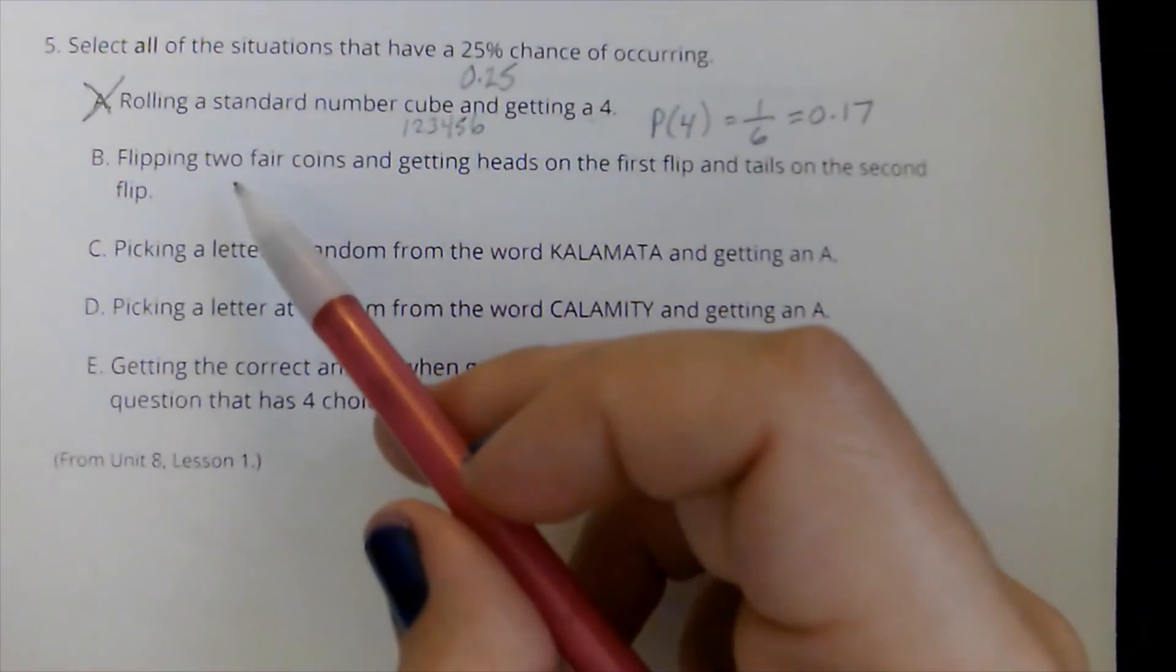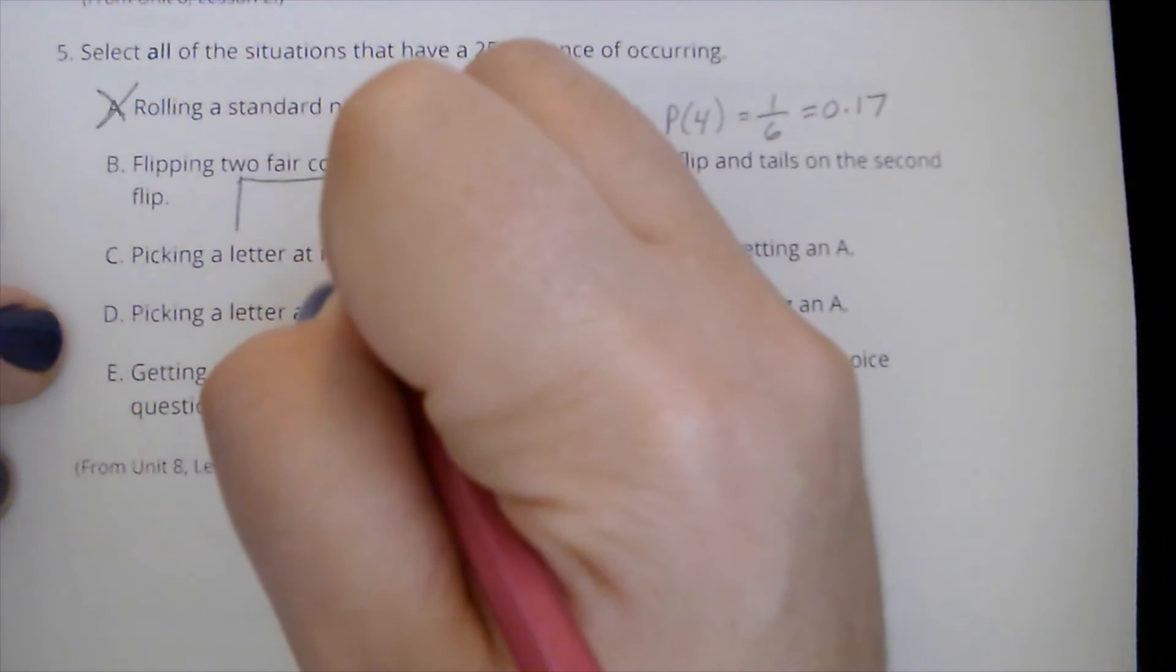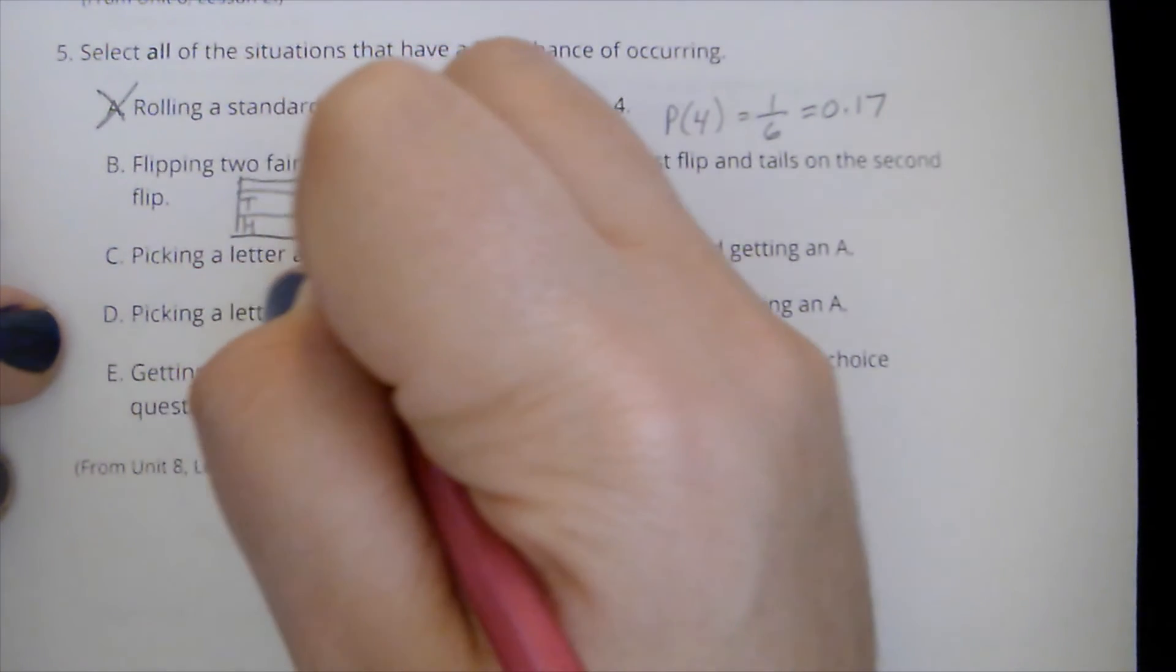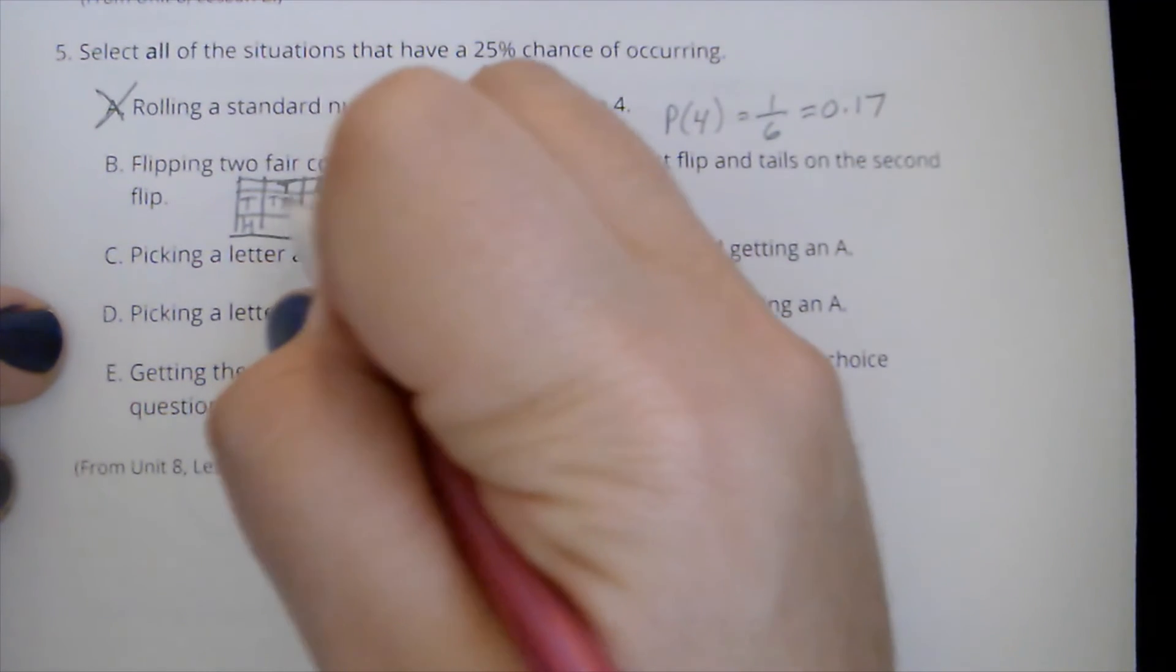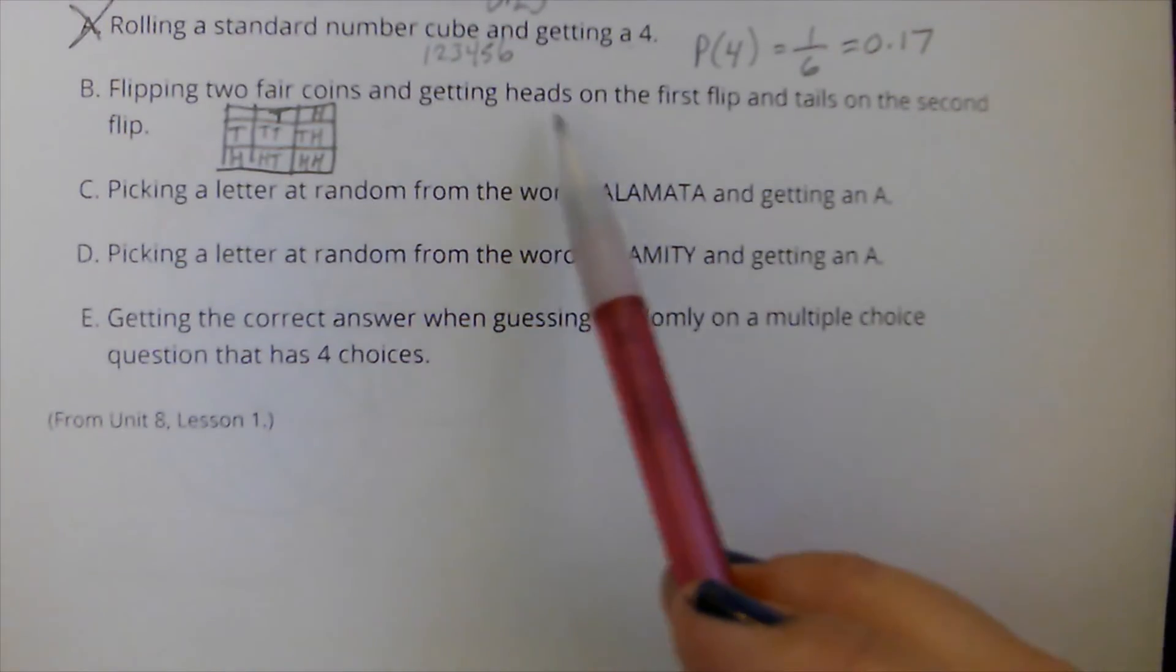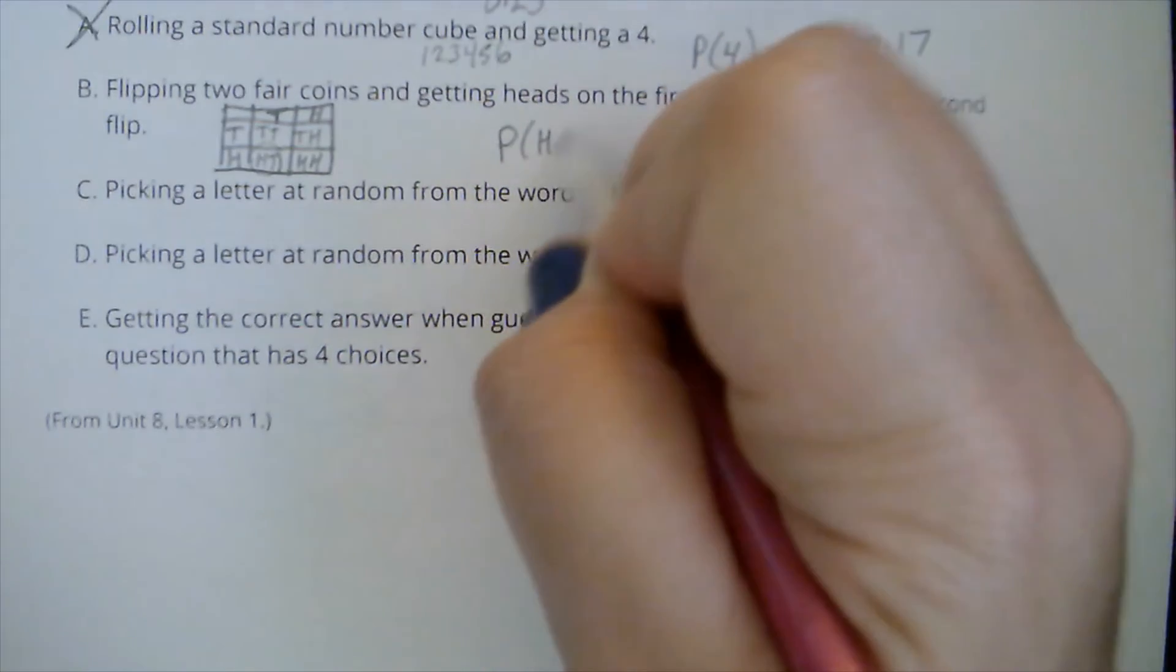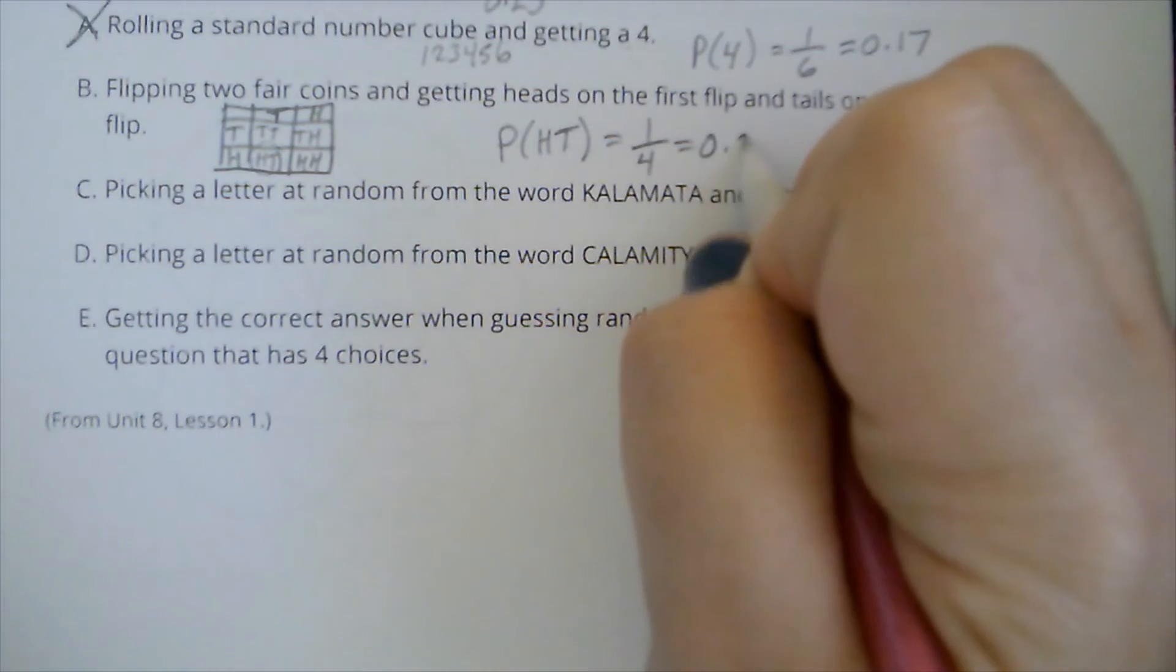So then I have the next option. Flipping two fair coins and getting heads on the first flip, tails on the second flip. So if I'm thinking of flipping two coins, if I get a tails or a head on the first flip, and then looking at tails or heads on the second flip, I can get tails, tails, tails, heads, heads, tails, heads, heads. So there's four options. Of those four options, I want first getting heads on the first and tails on the second. So that's heads, tails. There's only one. So one out of four. So the probability of getting heads and tails, heads first, tails second, is one out of four options. So that's a 0.25. So I want to choose this one.